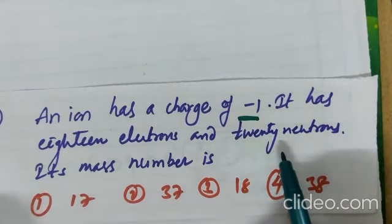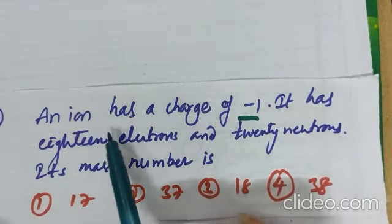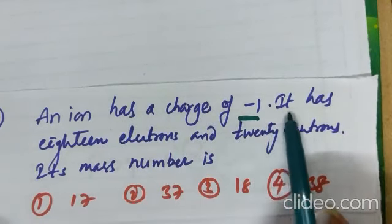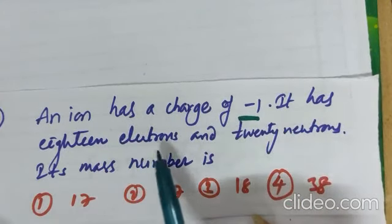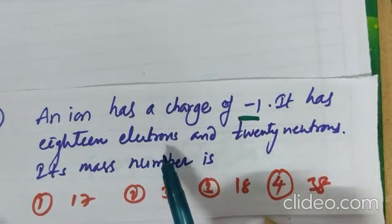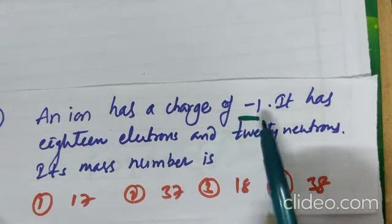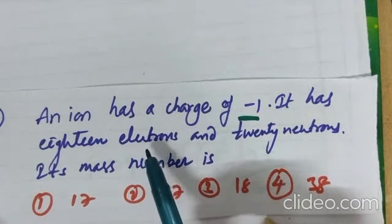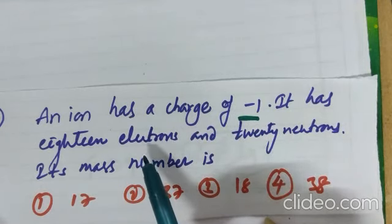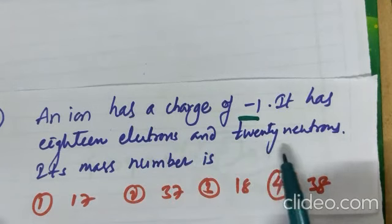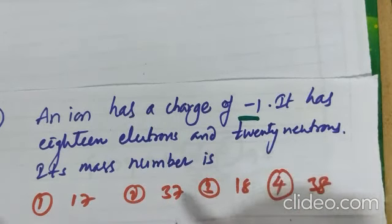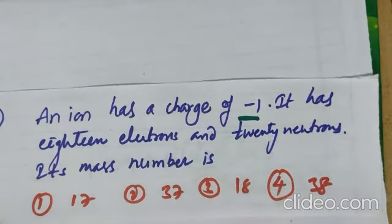Nucleus contains protons and neutrons. Here given, 20 neutrons. We have to find protons. An ion has charge is minus 1. It has 18 electrons. Means, that element has how many protons? After minus 1, 18 electrons. So, definitely, it has 17 protons. And, 20 neutrons. 20 plus 17. 37 is the answer.